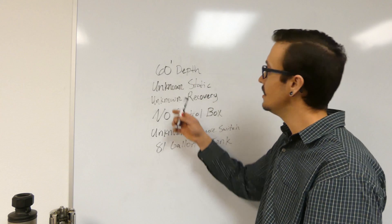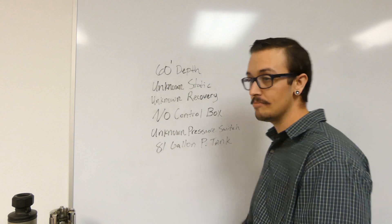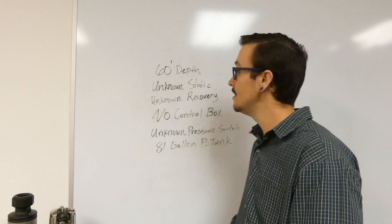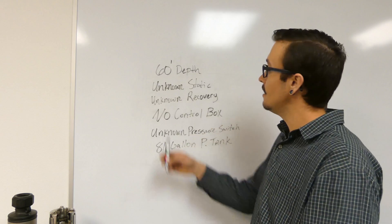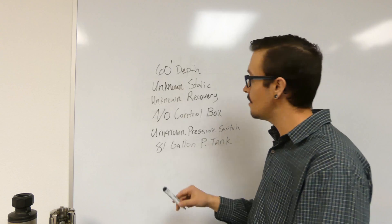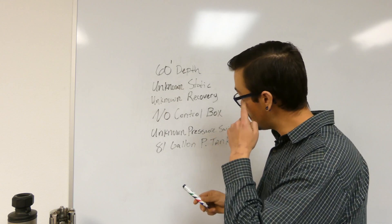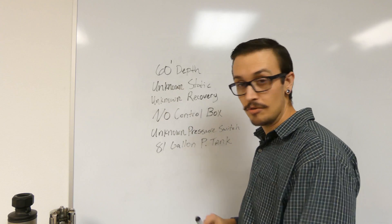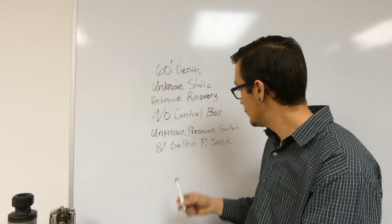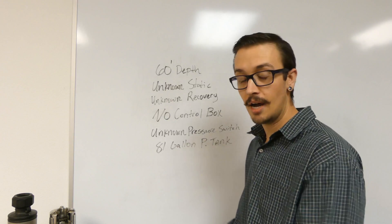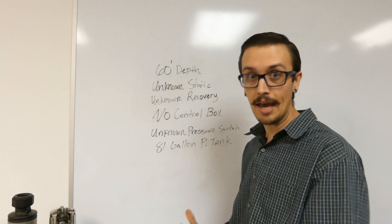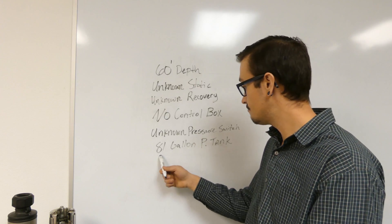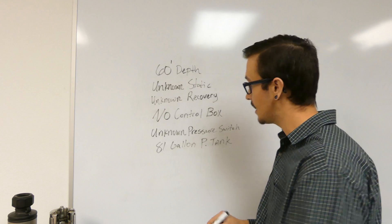Okay, so here's the next problem. This one's pretty cool. 60 foot well depth - by some miracle we know that it's 60 feet deep. Unknown static water level, unknown recovery rate, we don't have a control box that we can find. I don't know what the pressure switch is set at, the cap's lost. We do have an 81 gallon pressure tank.